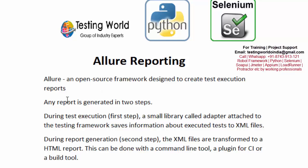In Allure, a report can be generated in two steps. In step one, when we are going for the execution of test cases, a small library called an adapter is attached to the testing framework. If you are working with Selenium and Python, a small adapter will attach to our existing framework and generate an XML formatted report at the end of execution.